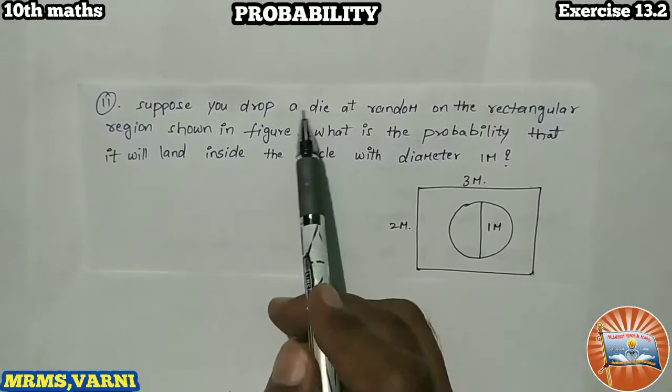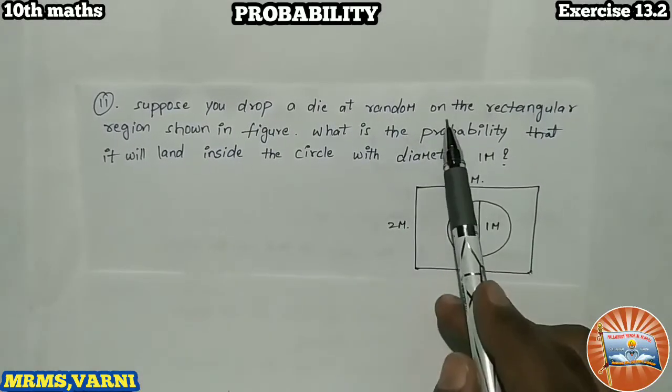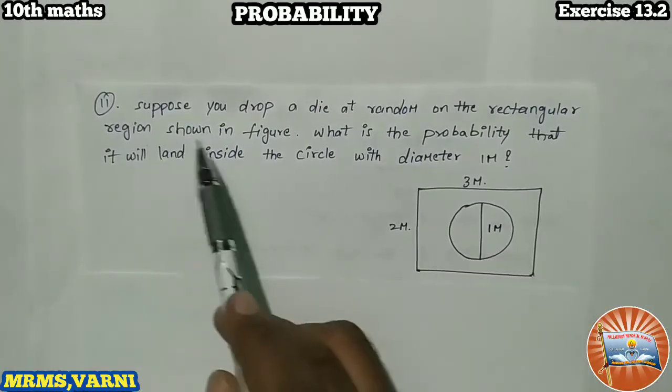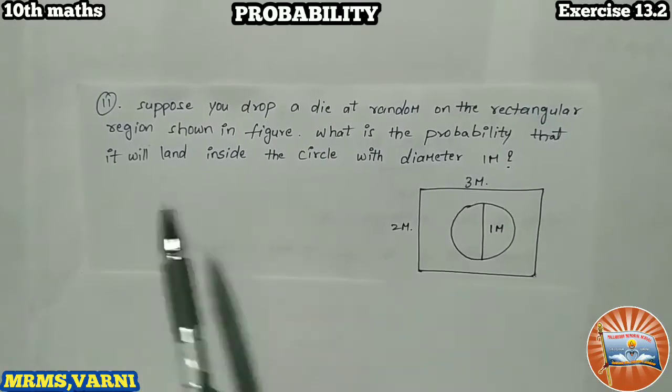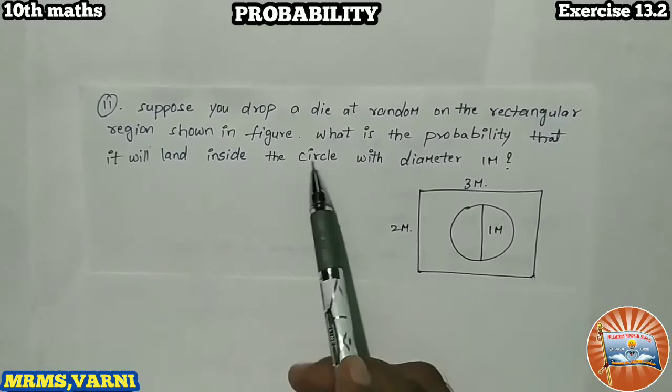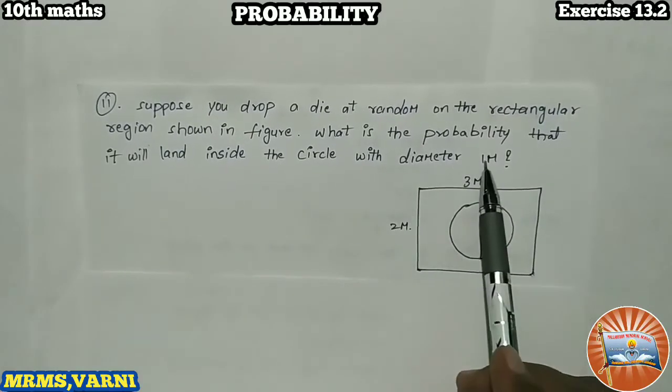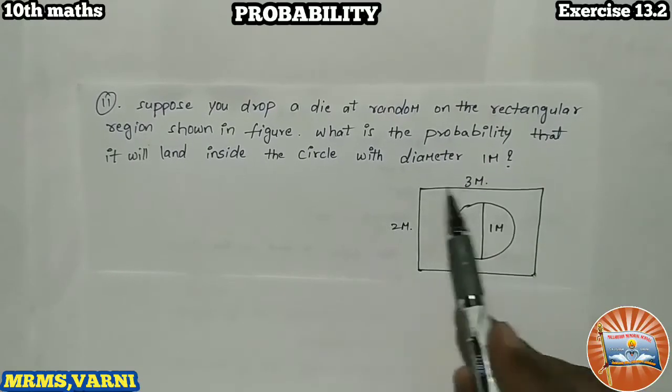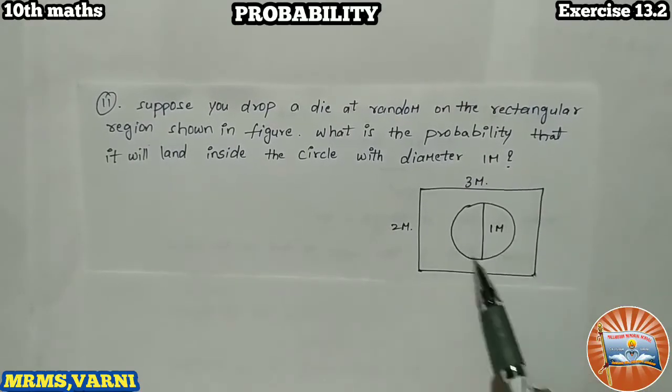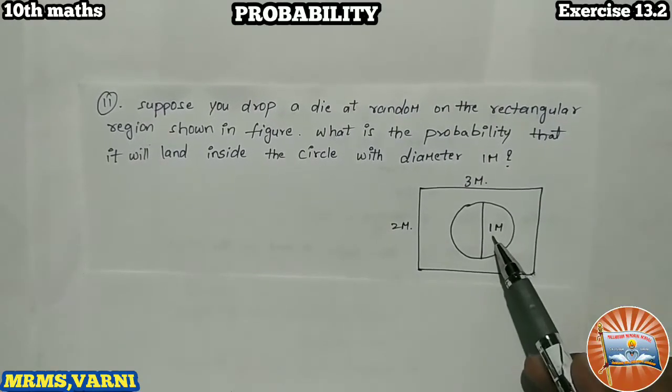Suppose you drop a die at random on the rectangular region shown in figure. What is the probability that it will land inside the circle with diameter 1 meter? This is the rectangular region given. Inside one circle is there, that is of diameter 1 meter.